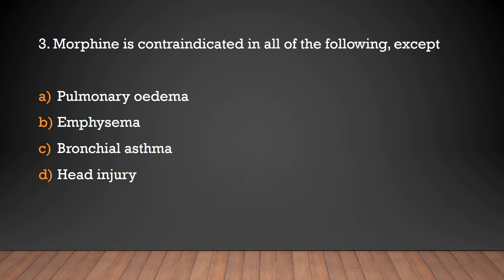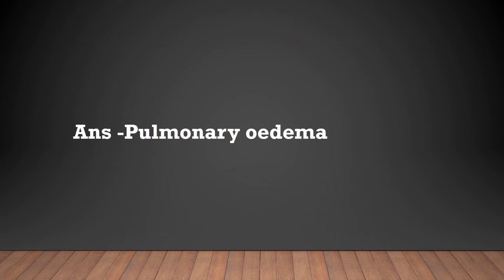Morphine is contraindicated in all of the following except: pulmonary edema, emphysema, bronchial asthma, or head injury? The answer is pulmonary edema.